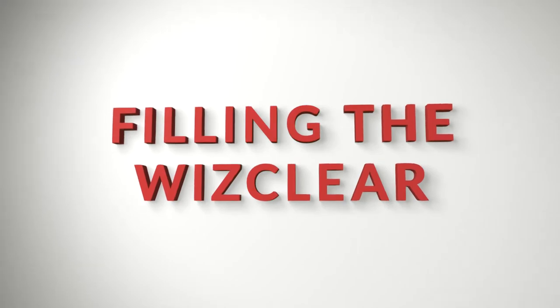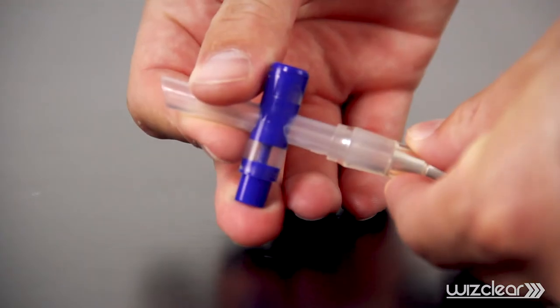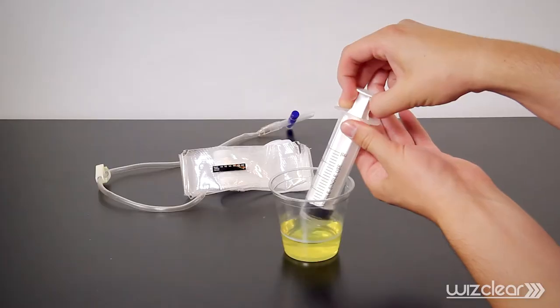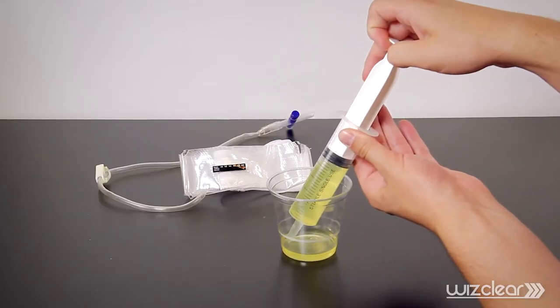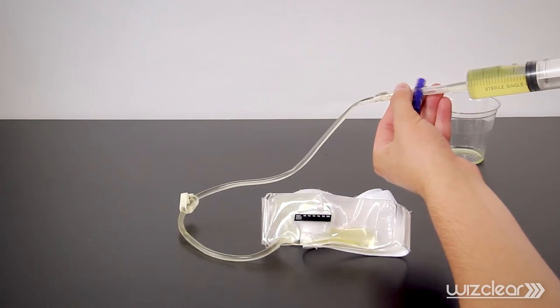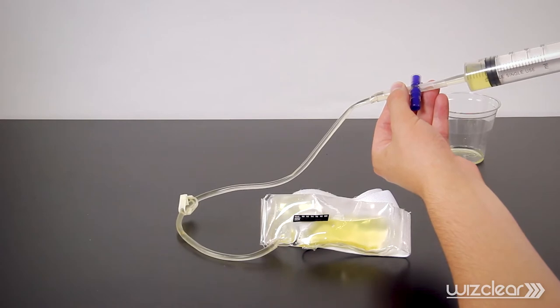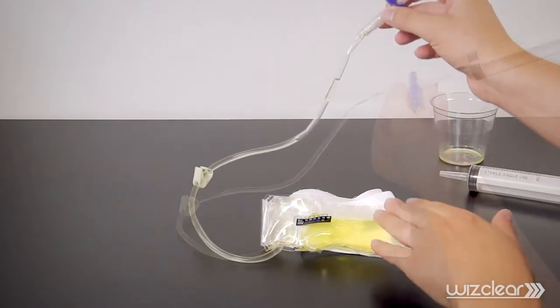Filling the WizClear: Filling the WizClear is easy. Double-check to make sure the arming clip and push-button valve are both fully open. Draw 60 milliliters into the provided syringe. Inject the WizClear with the full 60 milliliter sample of your synthetic urine. You should make sure that all the synthetic urine runs into the device and only a minimal amount is left in the lines.